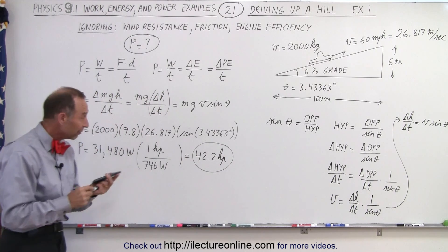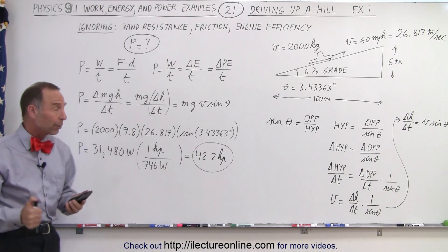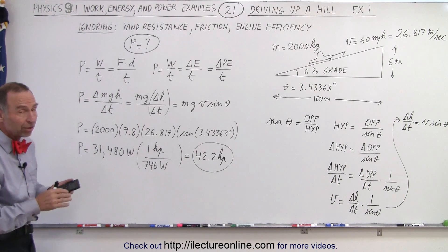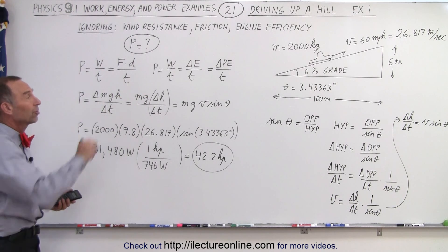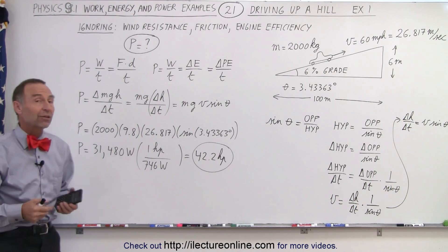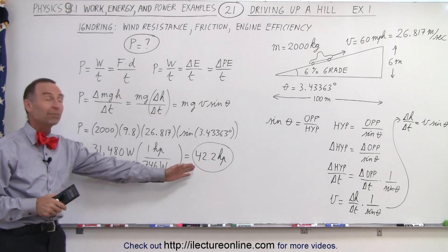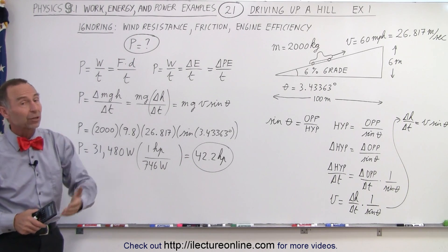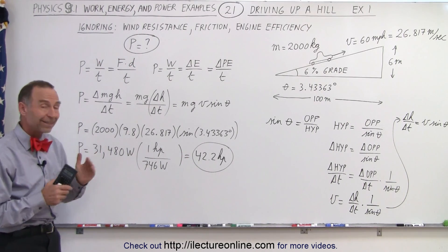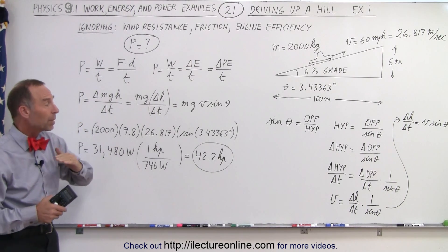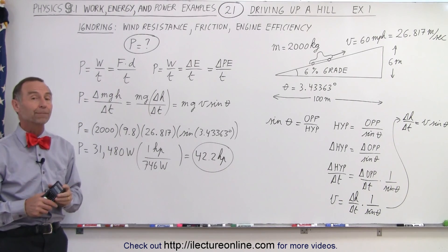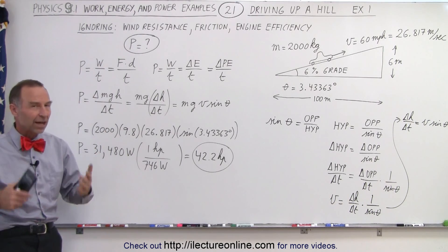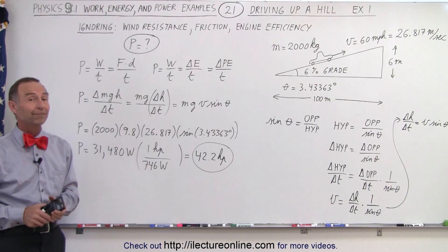That's the amount of power required to take a 2,000 kilogram car — just over 4,000 pounds — and drive it up a 6% grade at freeway speeds. That doesn't seem like a lot, and that's because we're ignoring other factors. But purely to gain that potential energy at that speed, that's the horsepower required. In the next videos, we'll start including those other factors to see how they change the power requirement.